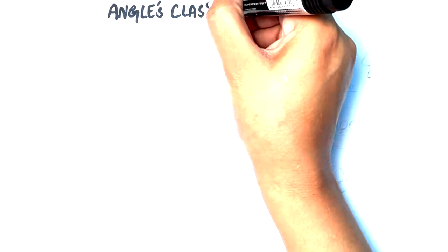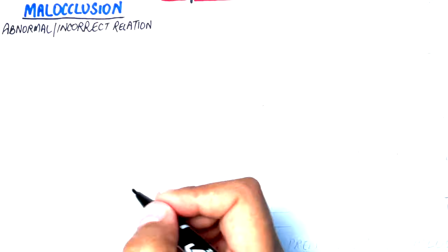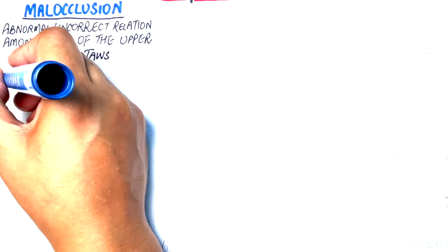The word malocclusion refers to any abnormal or incorrect relation among teeth of the upper and lower jaws. To understand what a malocclusion is, we must first look into normal occlusion.